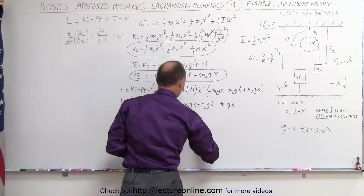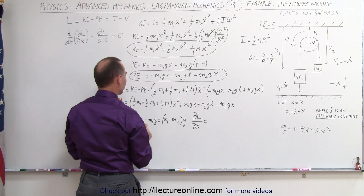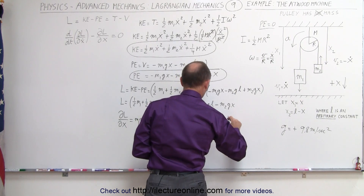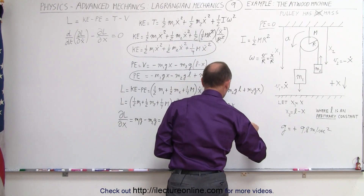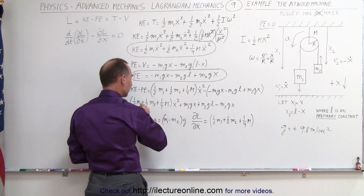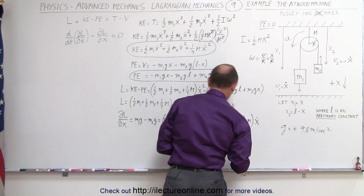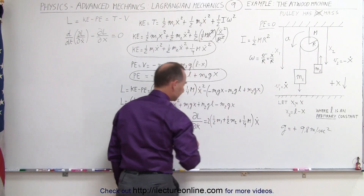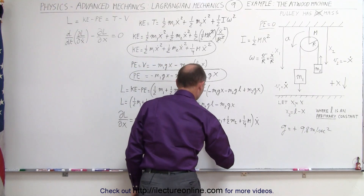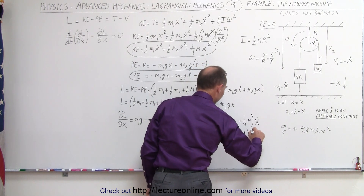Taking the partial of L with respect to x-dot, notice that all the potential energy terms go to zero — this is the only surviving term. We take the coefficient, which is one-half m1 plus one-half m2 plus a quarter times the mass of the pulley, multiplied times the derivative of x-dot squared. We bring the two in front, giving x-dot to the first power, and multiplying through: this equals m1 plus m2 plus one-half times the mass of the pulley, times x-dot.